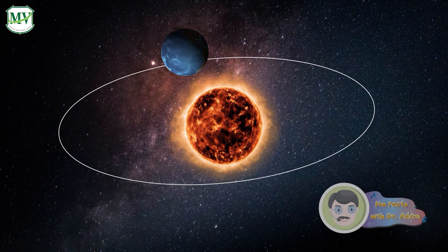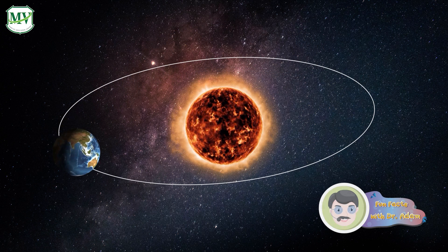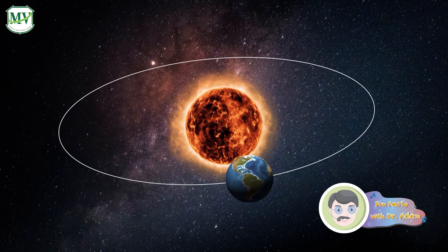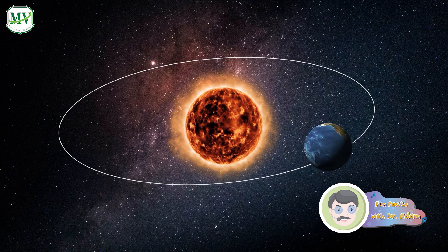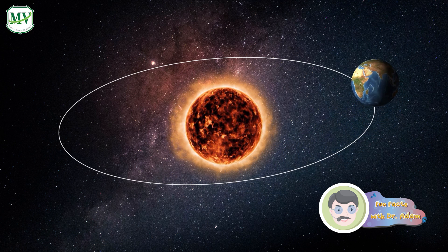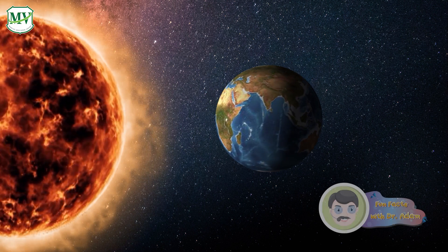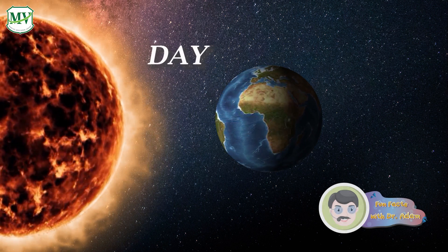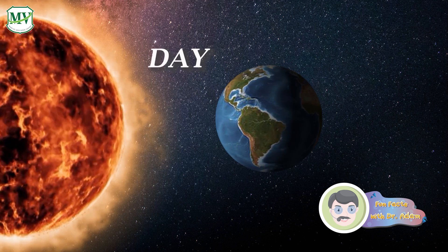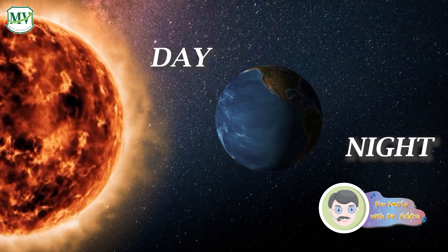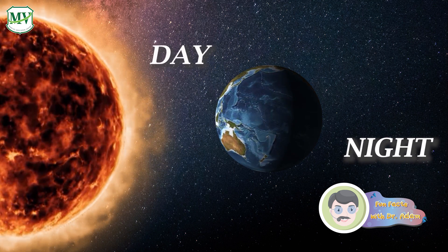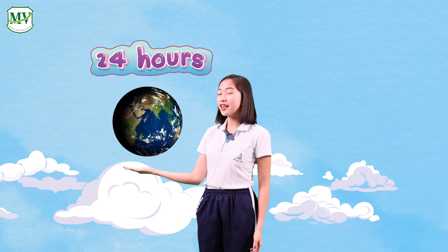As the earth rotates, it also moves around the sun. When the earth rotates, day changes to night and night changes to day. The part of the earth that faces the sun is day; the part which is opposite to the sun is night. That's how we have day and night!